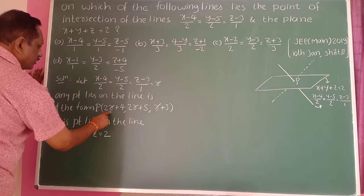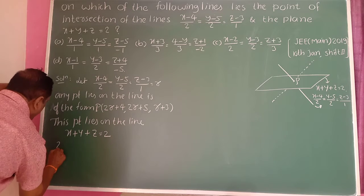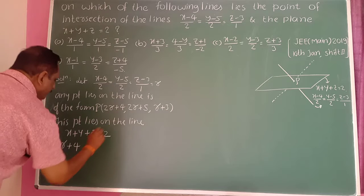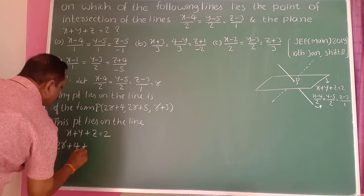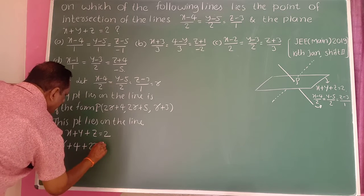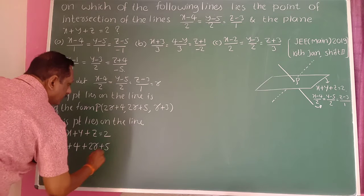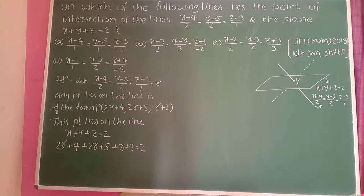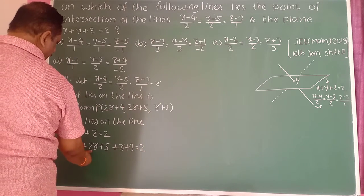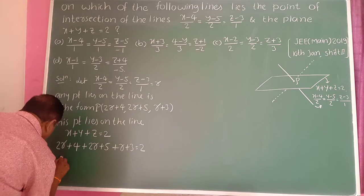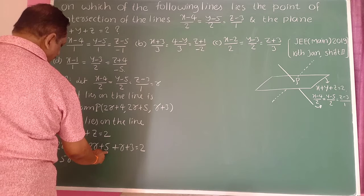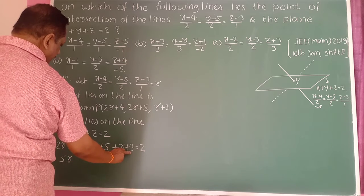Since point P lies on the plane x plus y plus z equal to 1, substitute: x = 2R plus 4, y = 2R plus 5, z = R plus 3. That gives 2R plus 4 plus 2R plus 5 plus R plus 3 equals 1. Combining: 5R plus 12 equals 1.